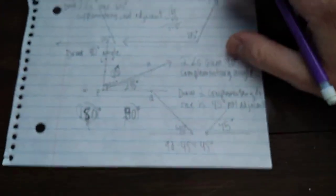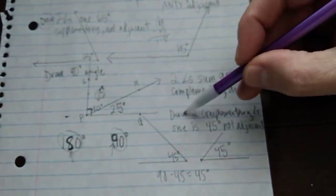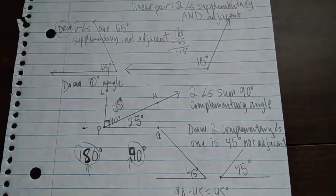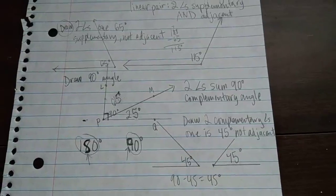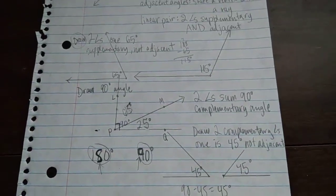So, you need to be able to use a protractor and a straight edge to draw complementary and supplementary angles. And sometimes, they will be adjacent and sometimes, they will not be adjacent.